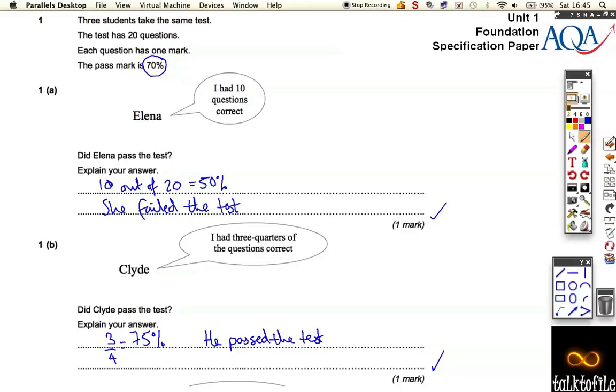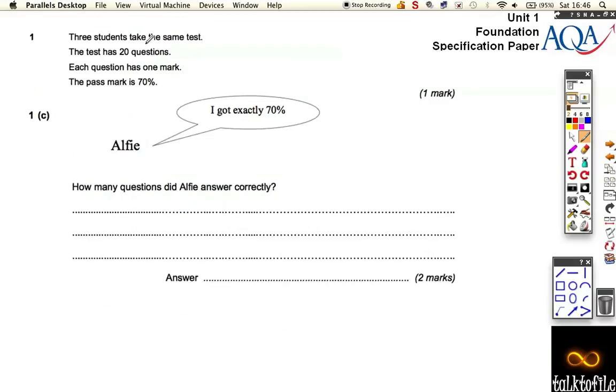Let's go to part C. Now I've just copied the words across because it goes across the page otherwise. This time, Alfie got exactly 70%, and it asks you, how many questions did Alfie answer correctly?